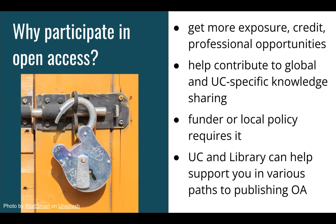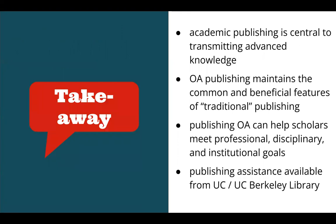The library also has some funding available to help cover open access related publishing costs, and we'll talk about those later. To recap: academic publishing is essential to advancing knowledge at UC Berkeley and other institutions. Researchers can publish open access without giving up peer review, without needing to publish in a different journal, and sometimes without any direct cost to the author. The UC has programs, tools, and funding to assist you in defraying costs where they arise.